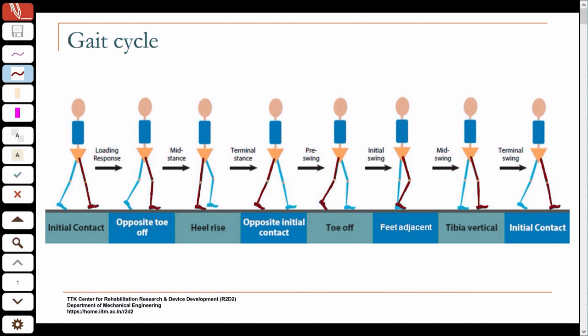Then you have toe off of this leg, the leg of interest, and as it swings through the two feet are adjacent. After that the tibia becomes vertical and the leg swings through to attain the posture for the next contact with the ground. So heel contact or initial contact of one leg to initial contact of the same leg constitutes one gait cycle, and then we identified the phases.